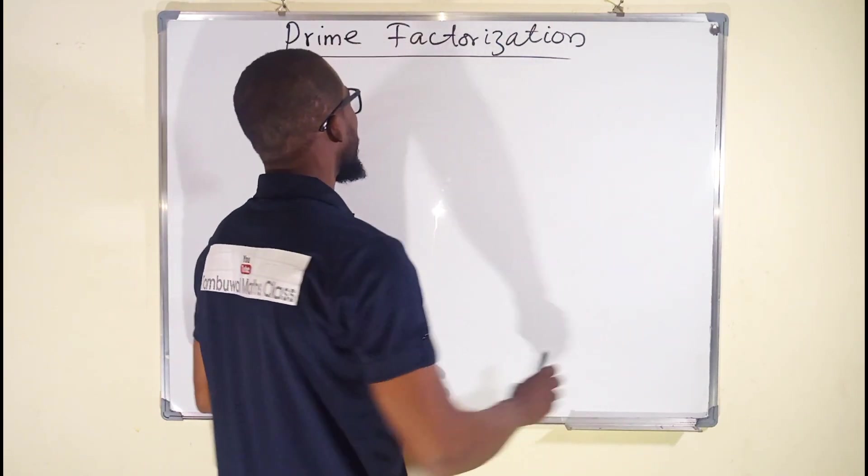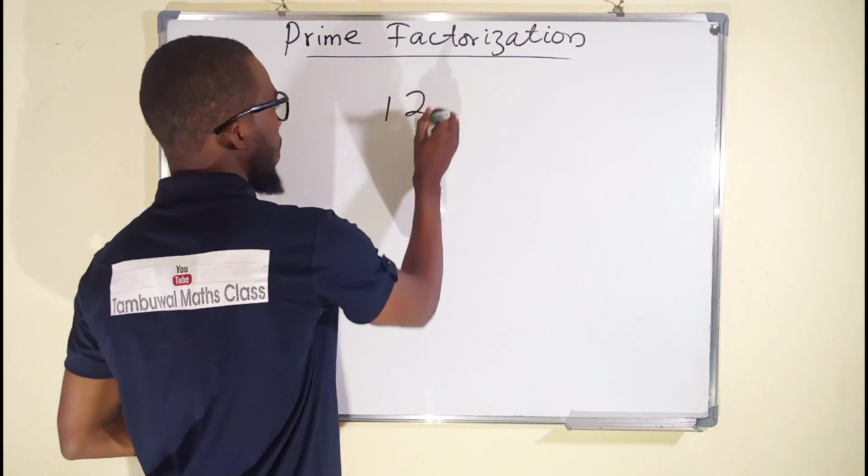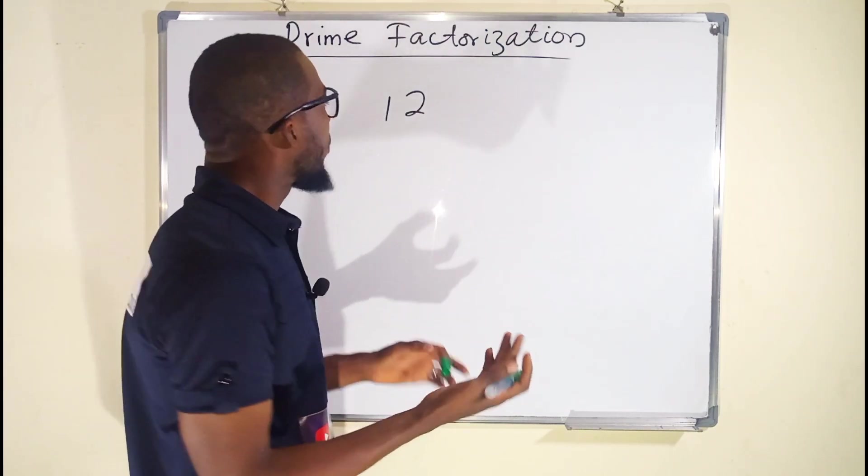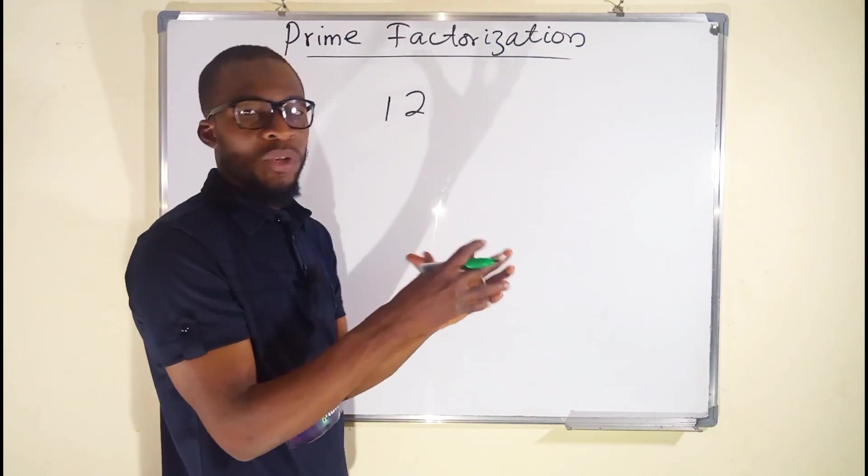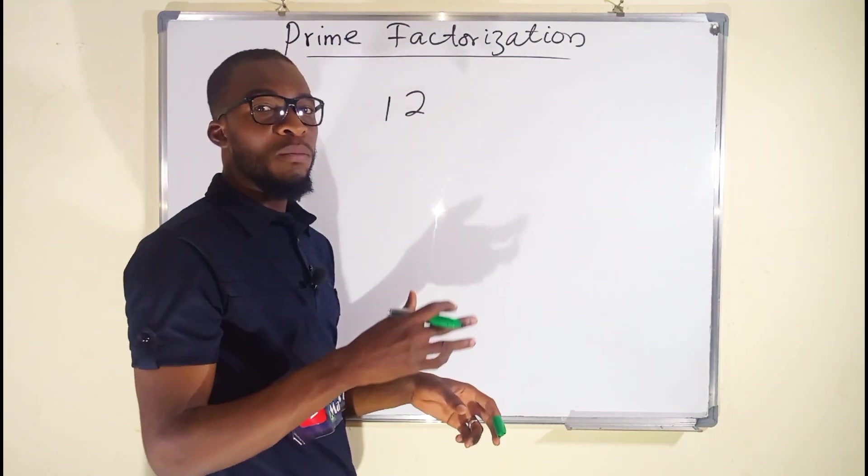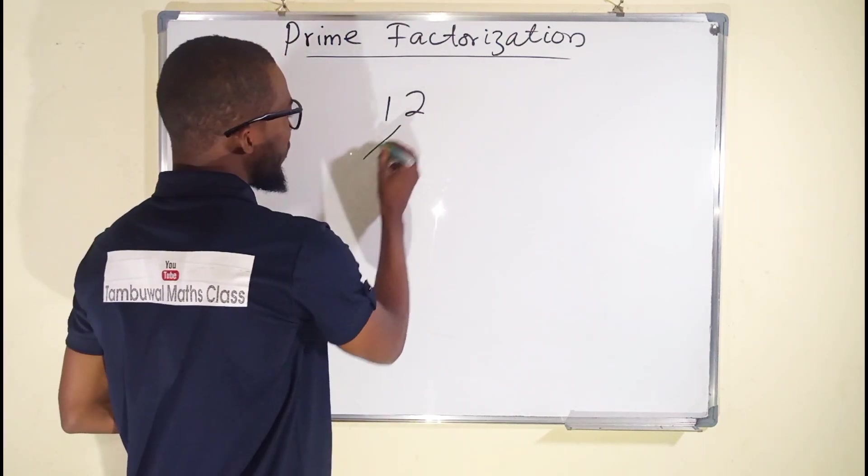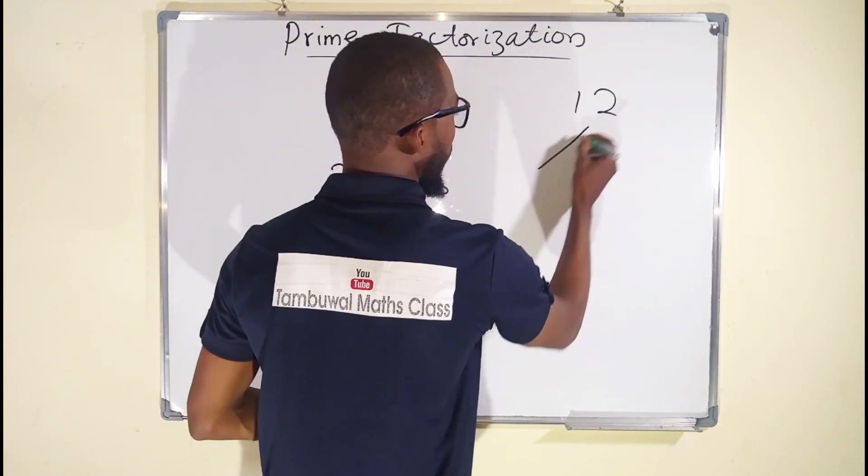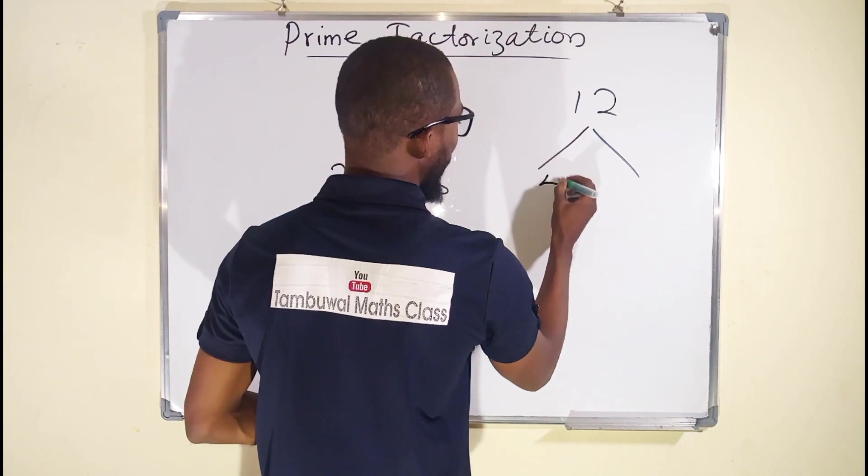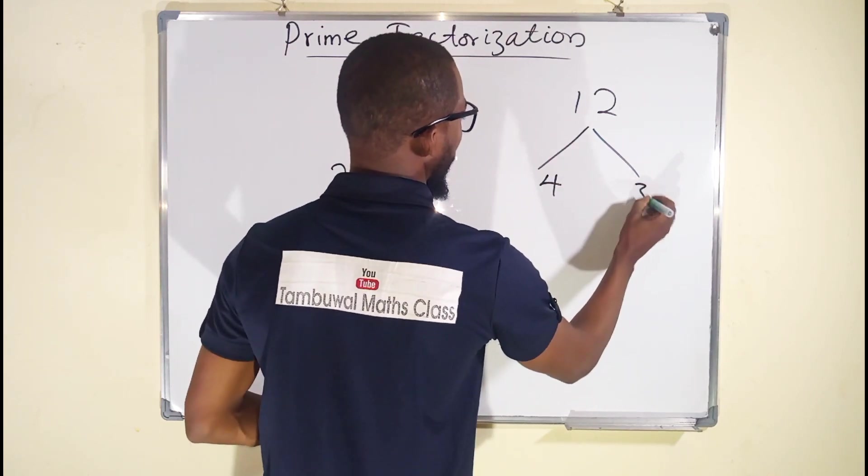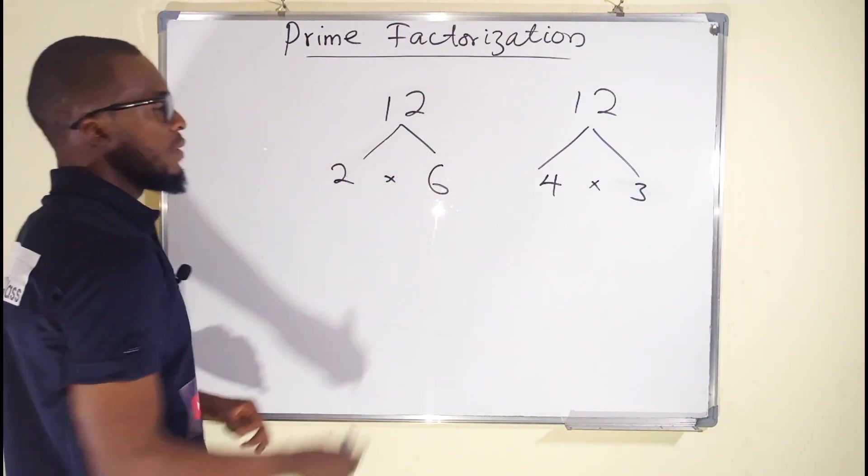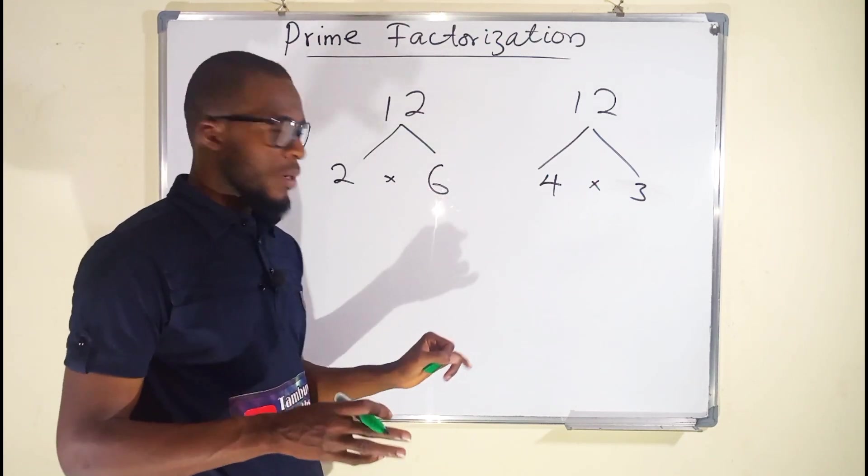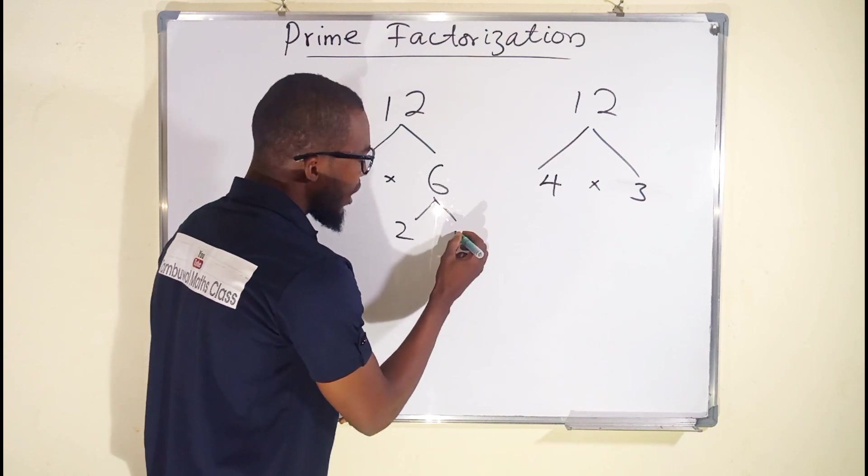Suppose we want to obtain the prime factorization of number 12. There are two possible ways we can do this. The first one is by factor tree. We're going to first of all think of two numbers we can multiply together to get 12. And the numbers must be greater than 1. So 12 can be splitted as either 2 times 6 or we can split it as 4 times 3.